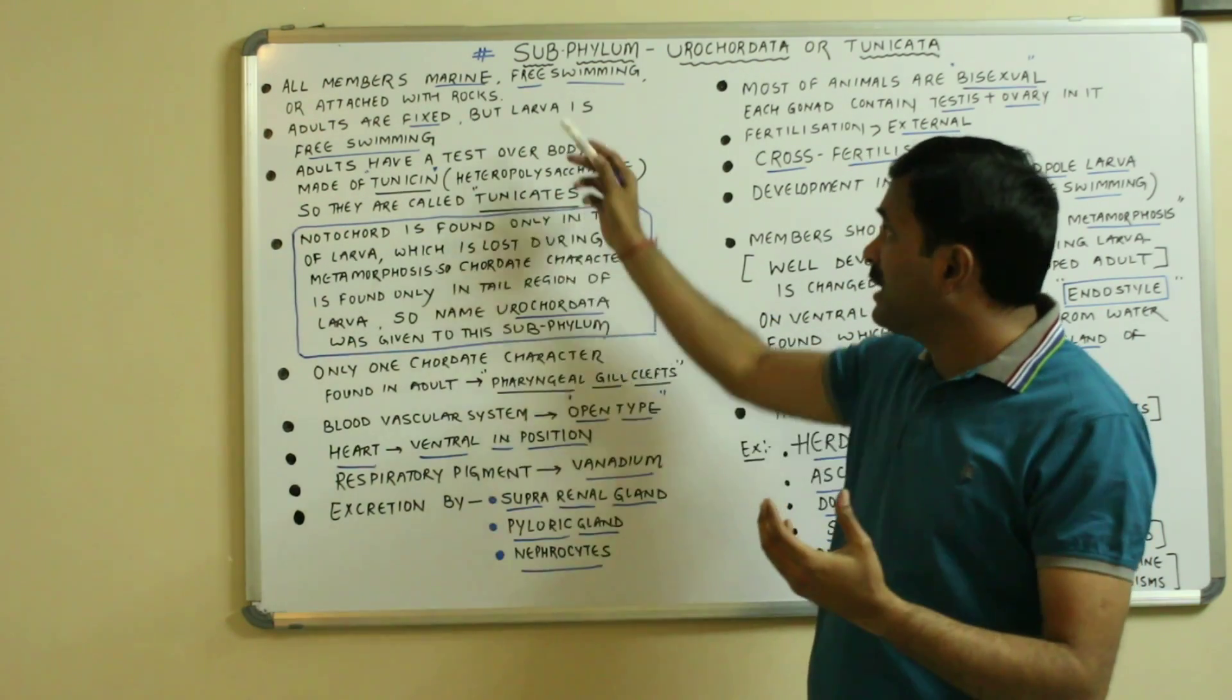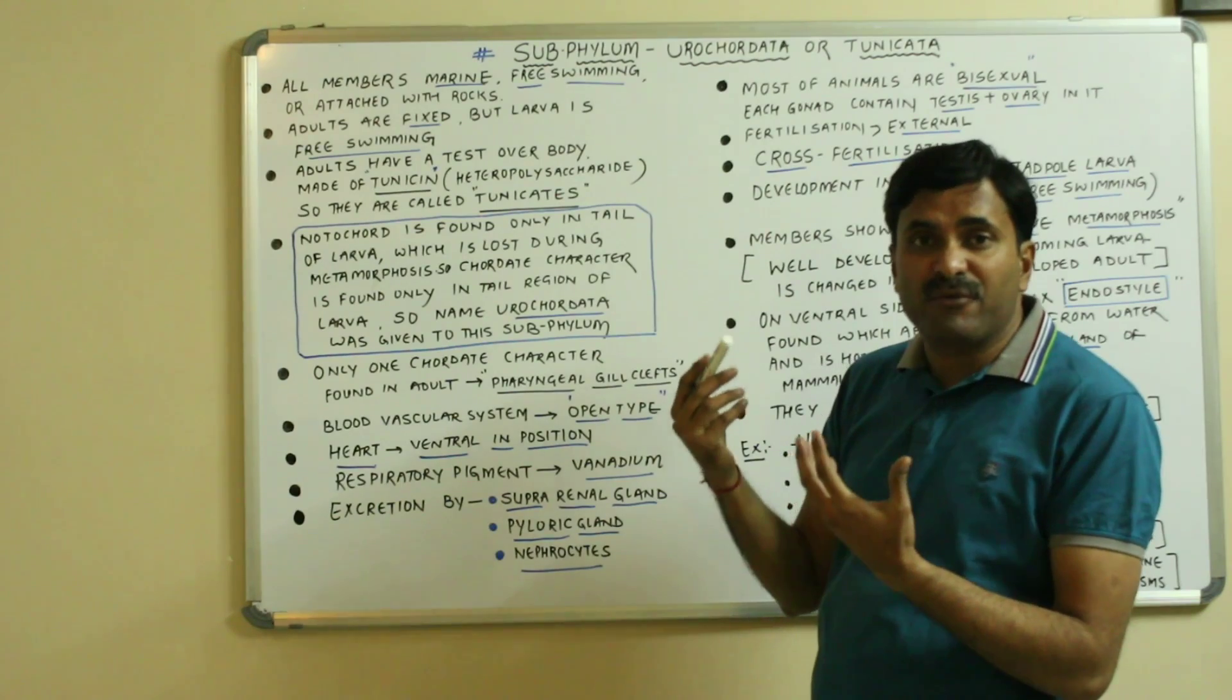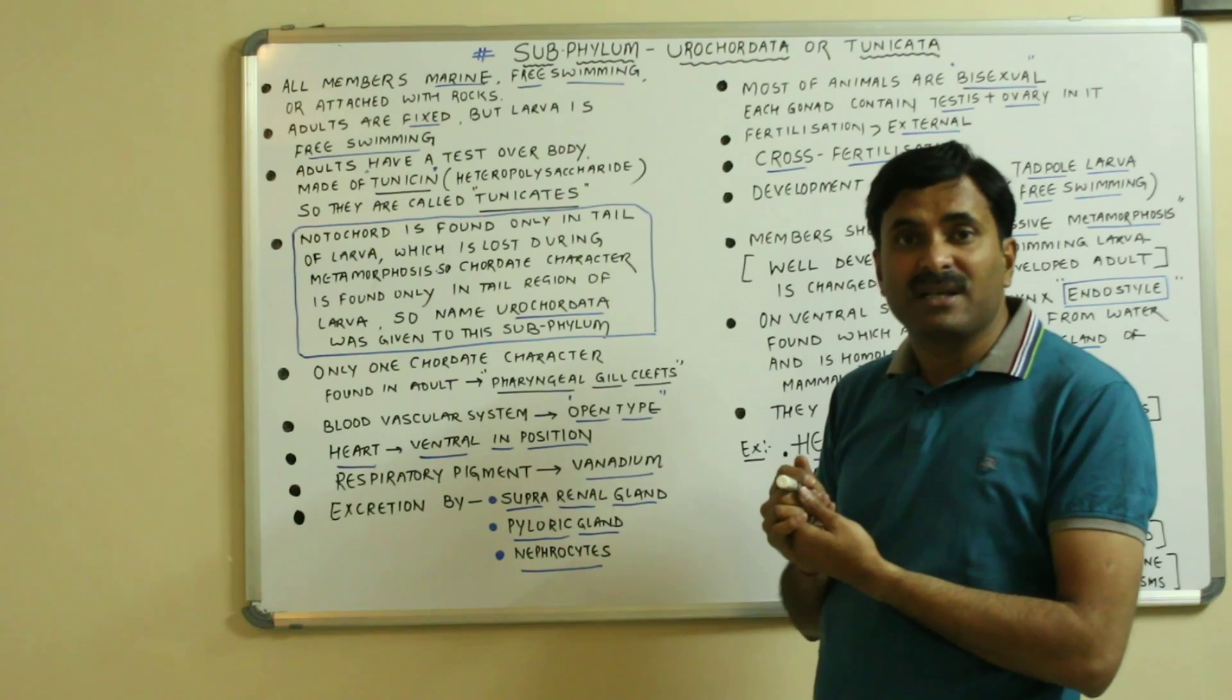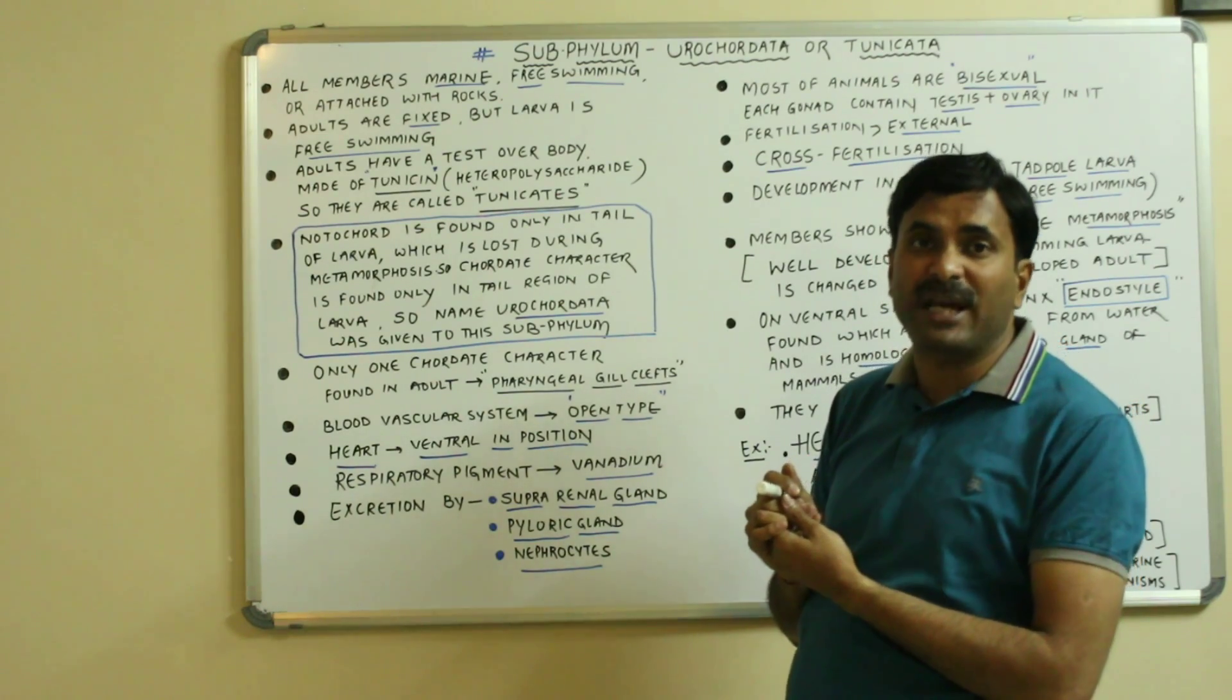Adults are fixed generally but the larva is generally free-swimming. In a couple of minutes, you will see that there is a free-swimming larva present in this subphylum and that is known as the tadpole larva.